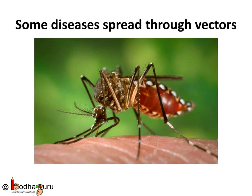Few organisms transmit pathogens or parasites from one person to another and spread diseases. For example, when a mosquito sucks blood of a patient suffering from dengue or malaria, it becomes the infectious agent. Then it sucks blood of another person and gives him the disease. Such organisms are called vectors.